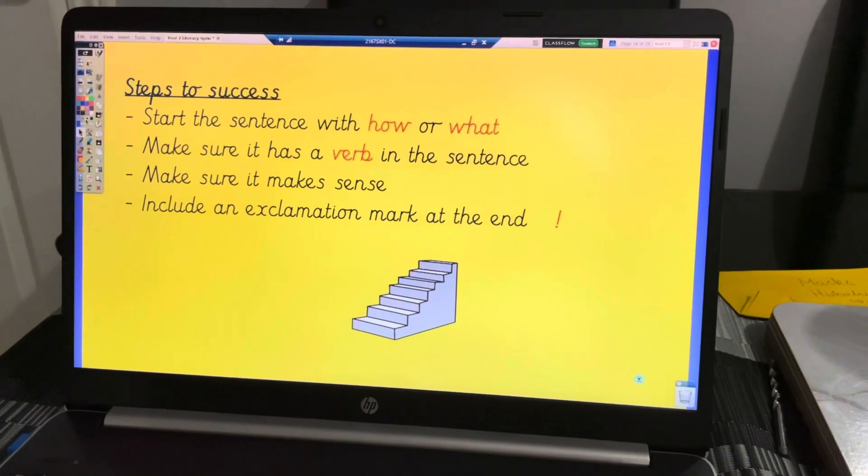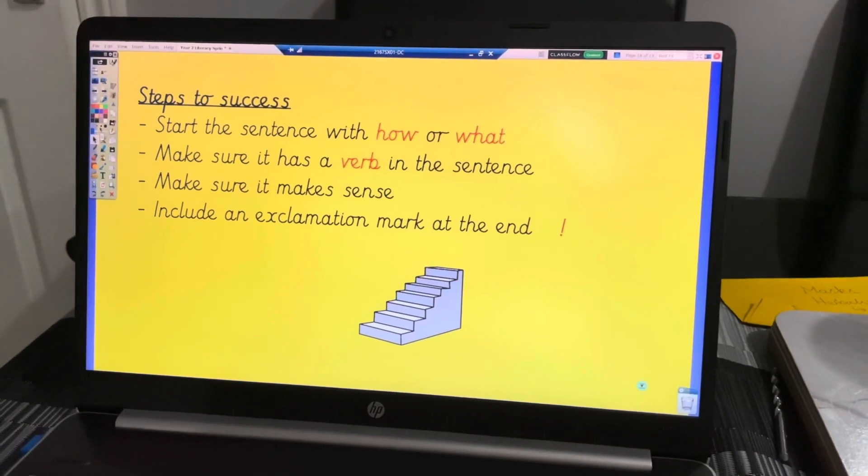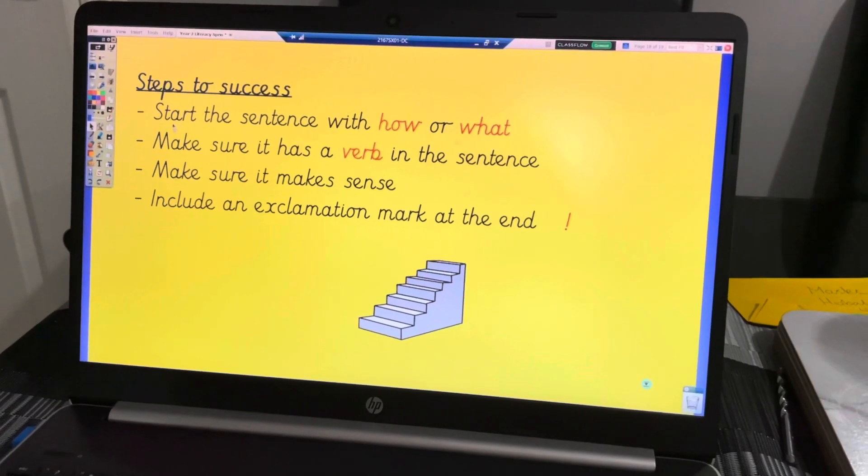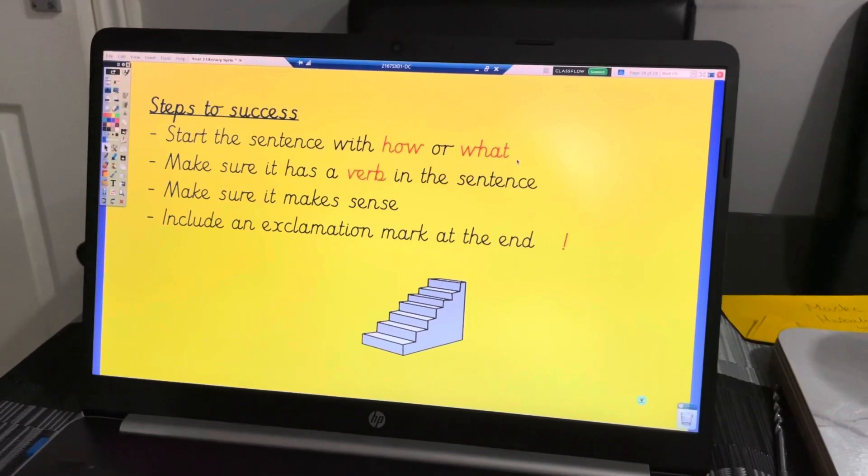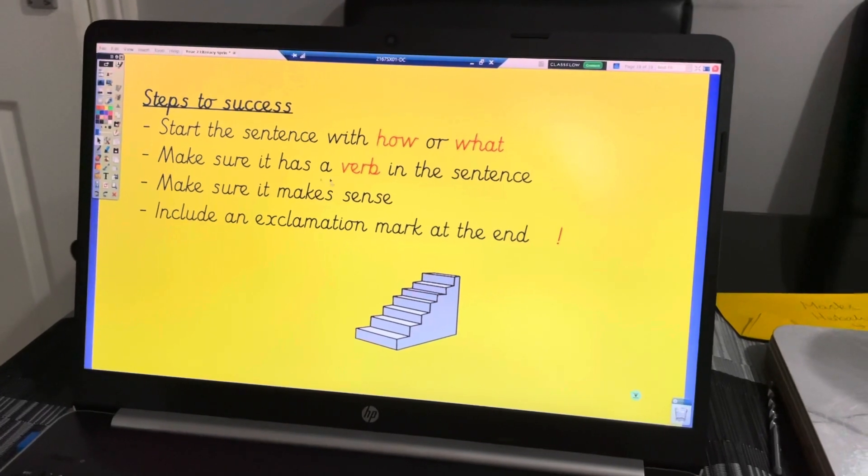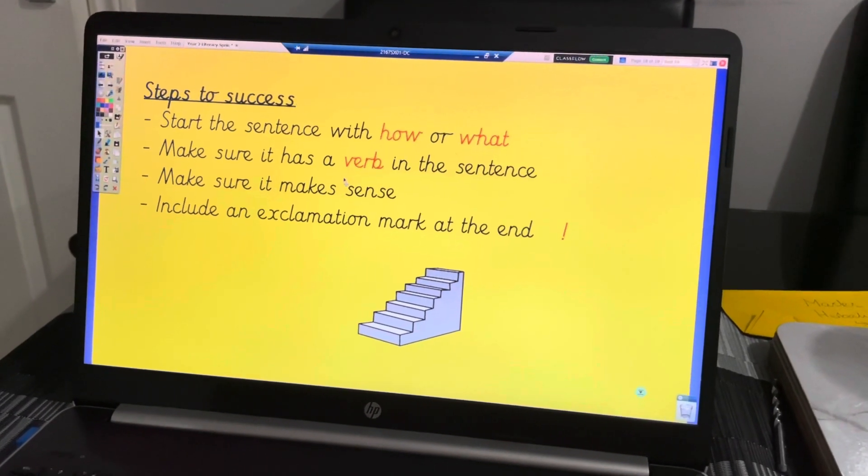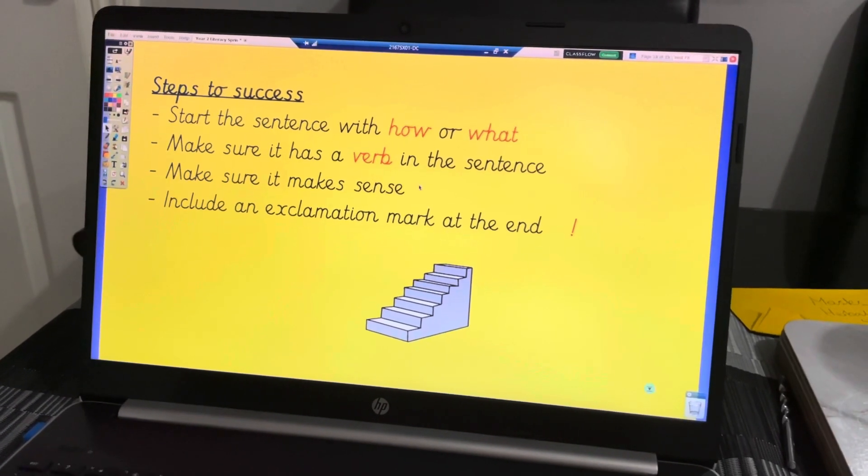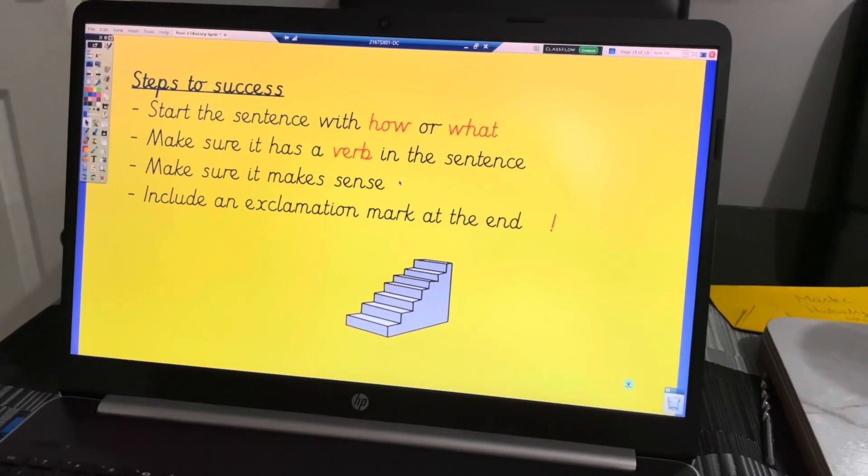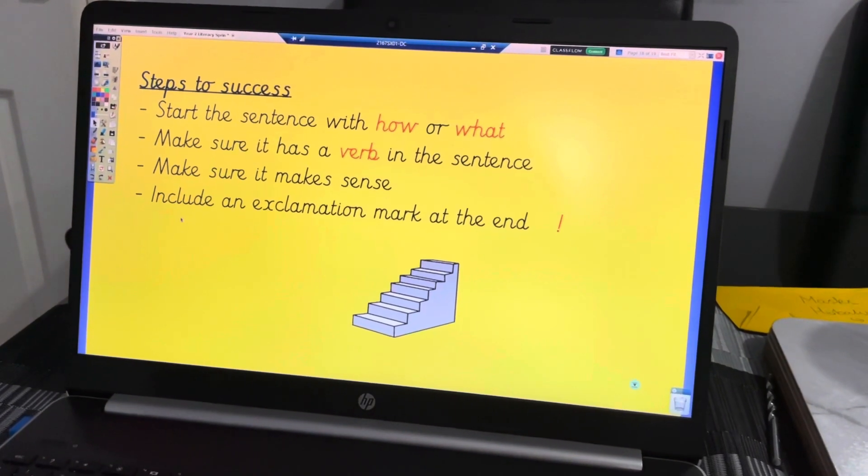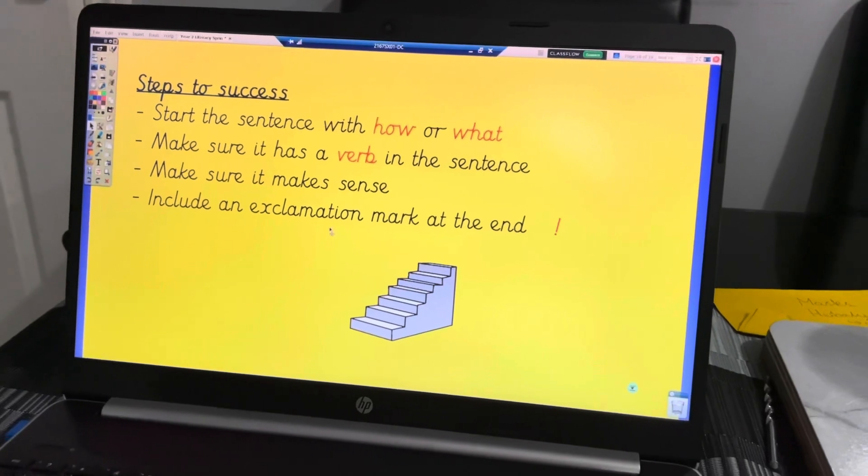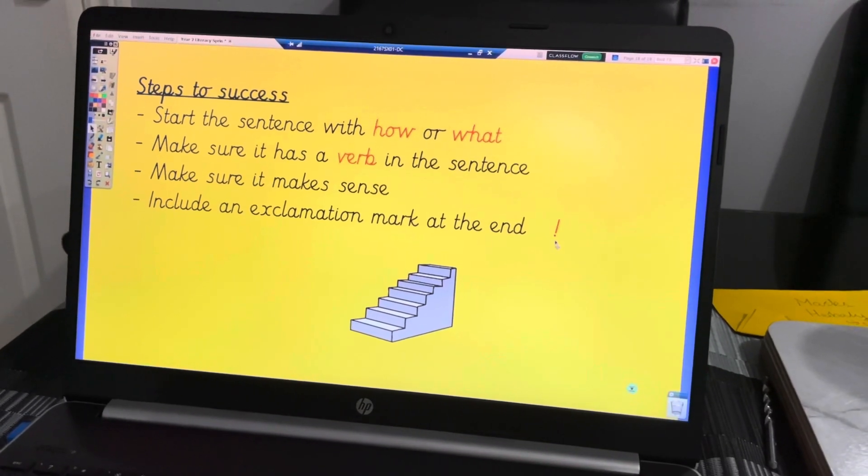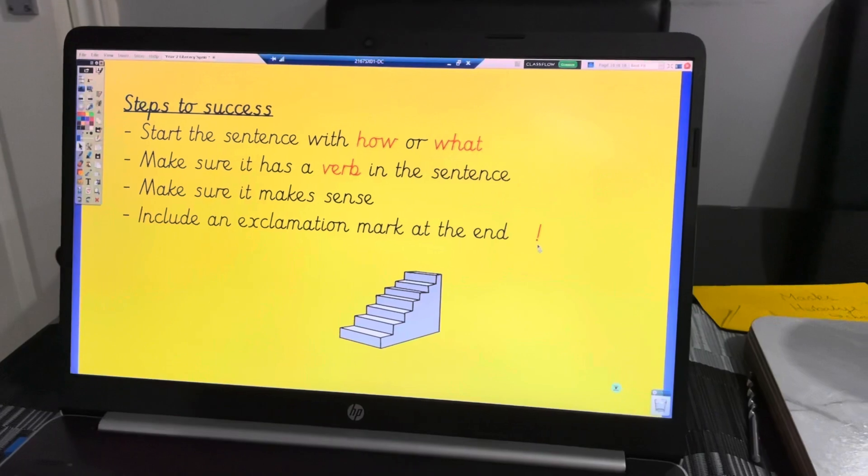If you're going to be successful writing exclamatory sentences, they need to start with 'how' or 'what'. They need to have a verb in them, usually at the end, but it can come in the middle. Normally those are regular verbs. They also need to make sense and have an exclamation mark at the end. Good luck everyone!